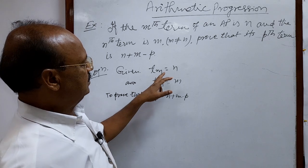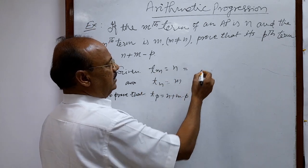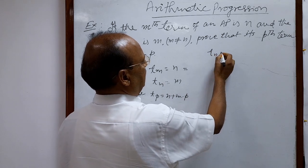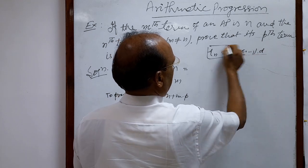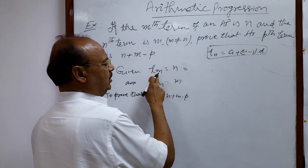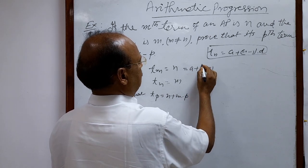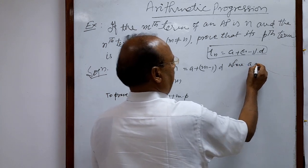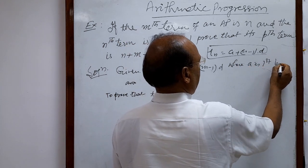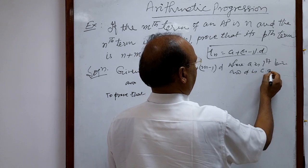So this is the mth term, which is n. By the formula for the general term, Tn equals a plus (n minus 1) times d. Let us use this formula here. So the mth term can be written as a plus (m minus 1) times d, where a is the first term and d is the common difference.